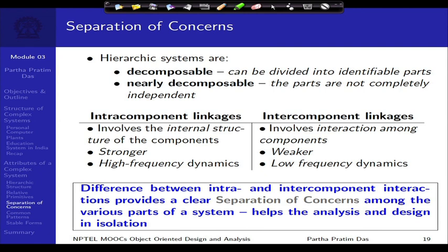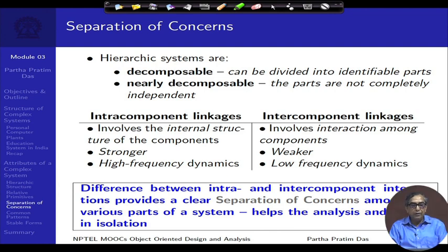The next attribute of a complex system is separation of concern — hierarchic systems are decomposable, that is, they can be divided into identifiable parts. A personal computer is decomposable in terms of CPU, hard disk, monitor, keyboard, and so on. At the same time, interestingly, they are nearly decomposable, in the sense that while we say these parts are decomposable, they are not completely independent. If the CPU were completely independent of the hard disk, the CPU would not be able to access files from the hard disk.